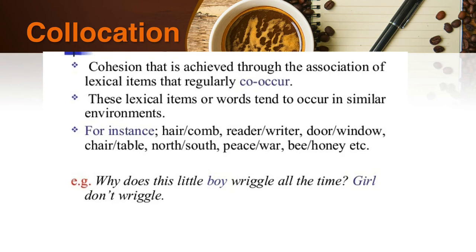The second type of lexical cohesion is collocation — it uses related words that typically go together or tend to repeat the same meaning. These words practically go in pairs. For example: hair and comb, reader and rider, door and window, chair and table, north and south, peace and war, and bee and honey. An example sentence: 'Why does the little boy wriggle all the time? Girls don't wriggle.' Here, the collocations 'boy' and 'girl' are used.